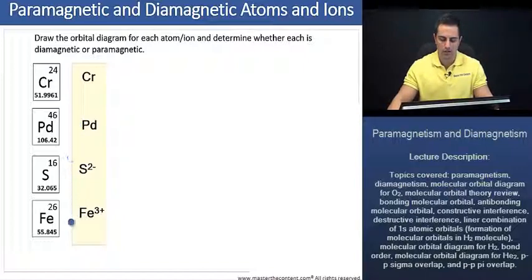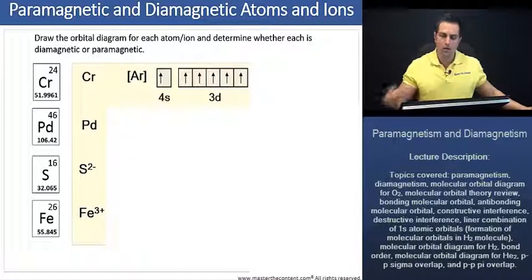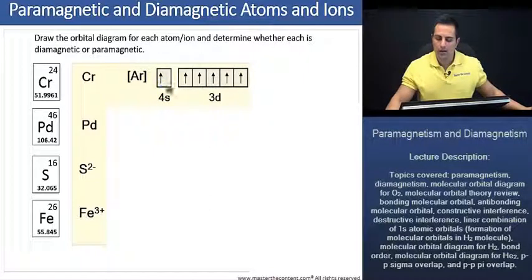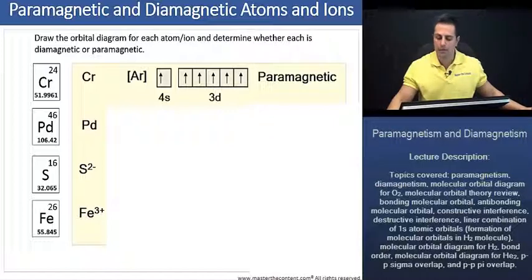For chromium, it has 24 electrons, and we would anticipate that the orbital box diagram for chromium is going to be as follows. Due to the presence of unpaired electrons, do we anticipate that chromium is going to be paramagnetic or diamagnetic? If you had guessed paramagnetic, you were correct.